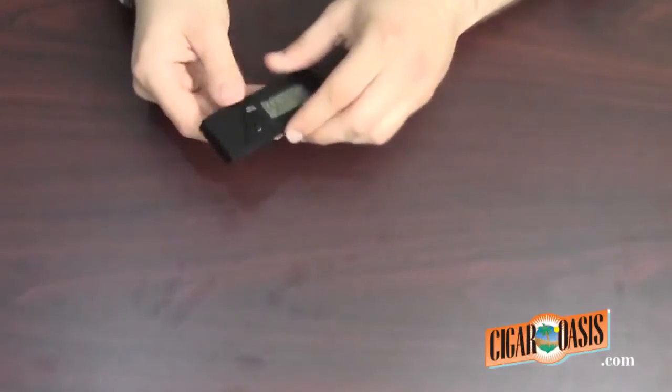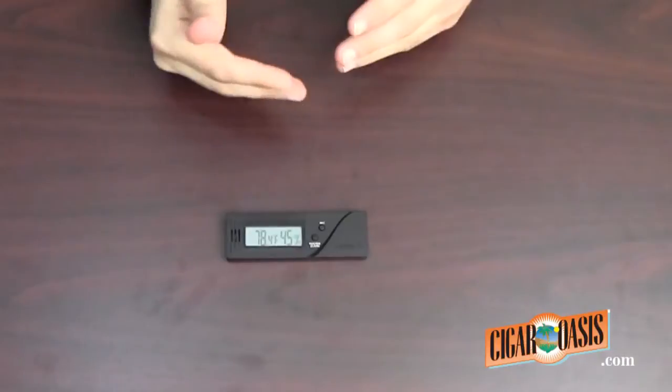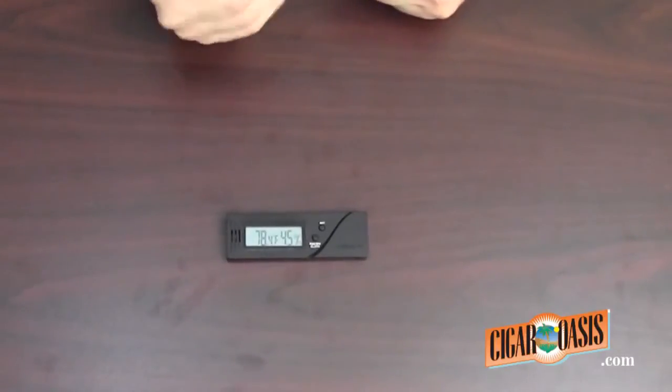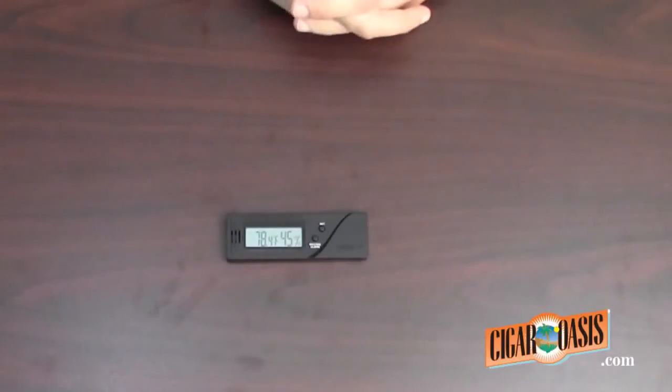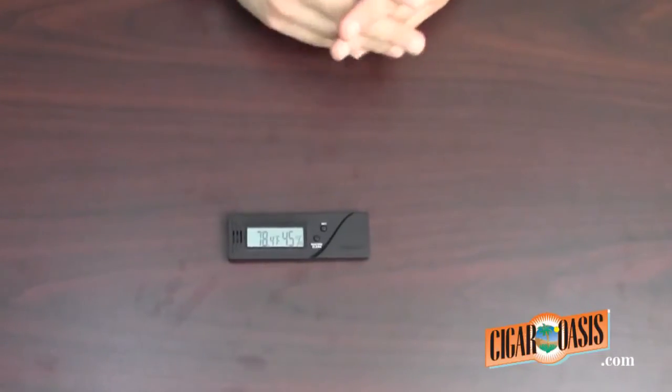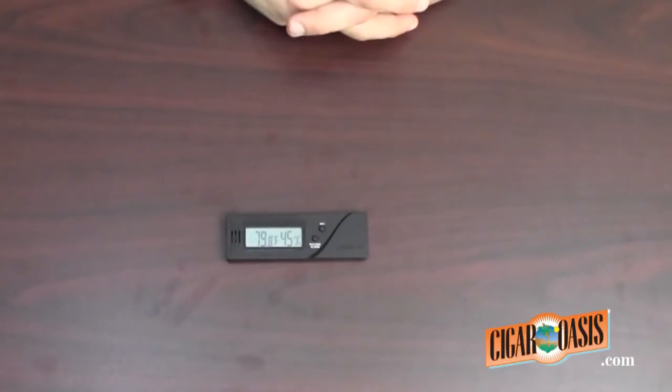So again, you're confirming the amount it's off by and if it's reading too low by any percentage point between 1 and 6, you will add that. If it's reading too high, you're going to minus that difference. And that is how you calibrate the Caliber 4 Digital Hygrometer.